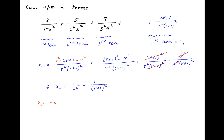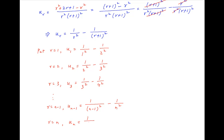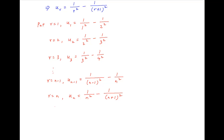Now put r = 1: we get u1 = 1/1² minus 1/2². Put r = 2: u2 = 1/2² minus 1/3². Put r = 3: u3 = 1/3² minus 1/4², and so on. The (n−1)th term: u(n−1) = 1/(n−1)² minus 1/n². Finally, putting r = n: un = 1/n² minus 1/(n+1)².